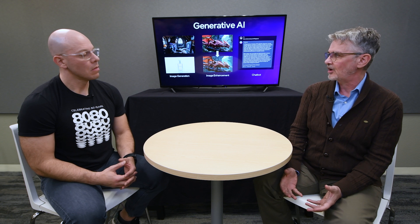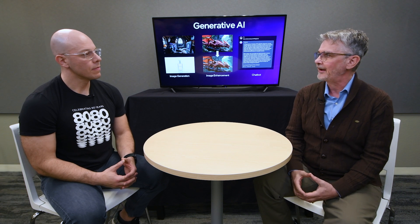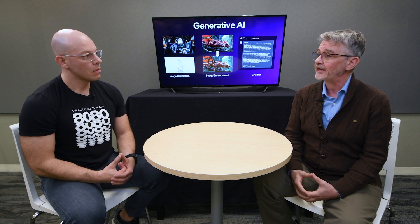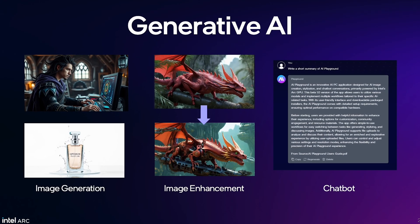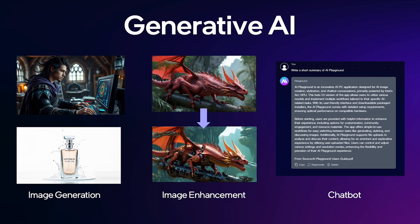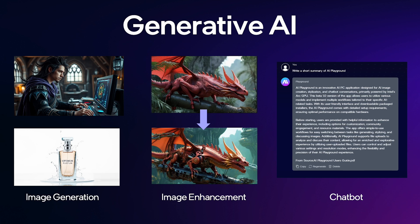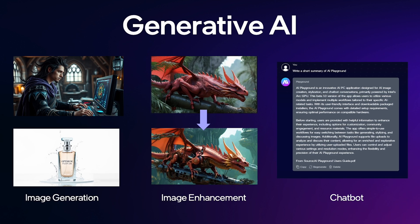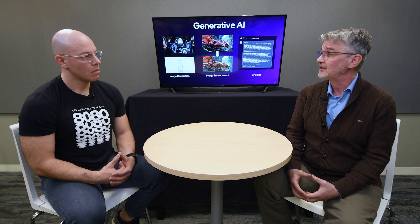For those people who don't know what Generative AI is, can you give us a little explanation of what it is? Generative AI is this really new, exciting area of compute that allows you to generate content from text prompts using a large AI model. So you can generate fantastic images — things you could only imagine, as well as images that would look like production photography. You can also edit and enhance images, and engage in something like a chatbot.